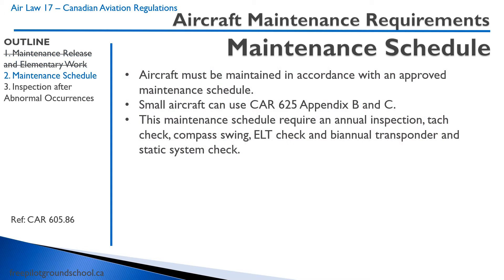Aircraft have to be maintained in accordance with an approved maintenance schedule. For a commercial operator, they apply to Transport Canada specifying intervals — for example, changing the engine every so many hours, repacking bearings at certain hours or calendar time. For small private aircraft, there's a blanket maintenance schedule contained in CAR 625 Appendix B and C. Appendix B covers what has to be done on an annual inspection, and C covers out-of-phase items. It's still a good idea to follow the manufacturer's maintenance schedule as well.